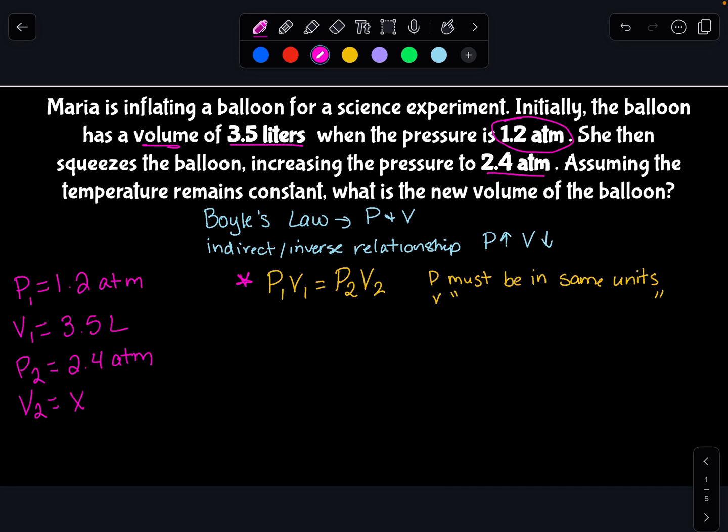Now the easiest way to solve these equations is to just take your variables and plug them directly into the equation. So for example, my P1 is 1.2 times my V1, which is 3.5, and that's going to equal 2.4 times x. Now the reason I put them in parentheses is so it looks more like a math equation. And so you can see that these two values, the 1.2 and 3.5, are multiplied together, and the 2.4 and the x are multiplied together.